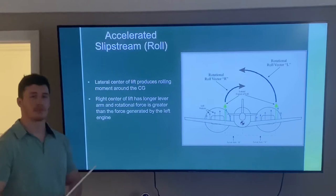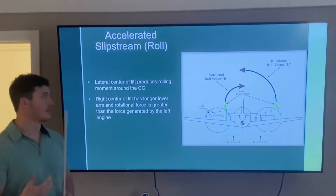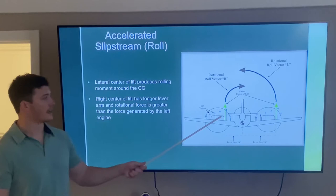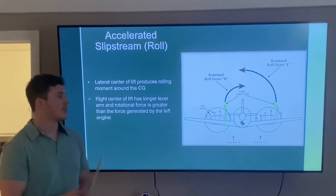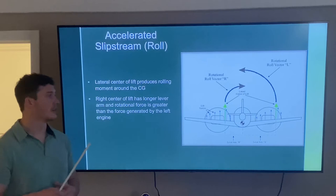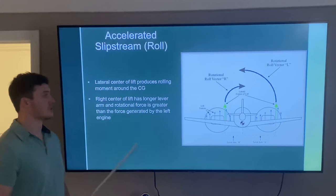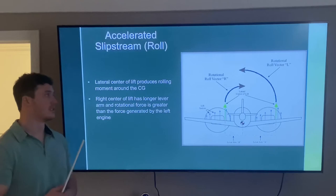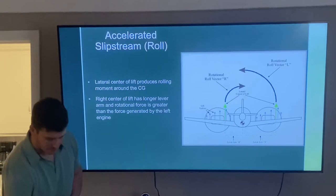Next is accelerated slipstream, which causes roll. The lateral center of lift produces a rolling moment around the center of gravity. You can see the lift vectors on the left engine and the right engine. The right engine's center of lift has a longer lever arm from the center of gravity, so losing the left engine causes a more prominent rolling moment — which is why the left engine is the critical engine in this scenario.